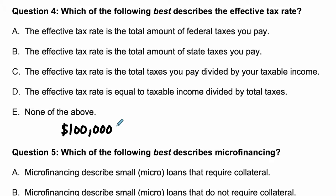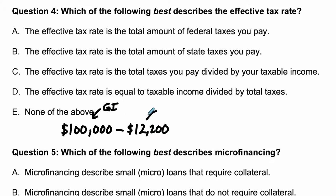You're going to pay taxes on that. Now before you pay taxes, you take away what's called a standard deduction. Or you might have some other more complicated way of doing this, but the idea is you take your gross income — GI for gross income — you take away your standard deduction. The government's not going to tax you on this amount. And what's left over, in this case $87,800, this is called your taxable income.